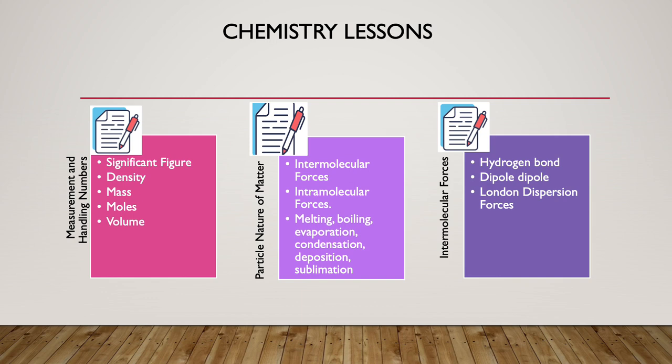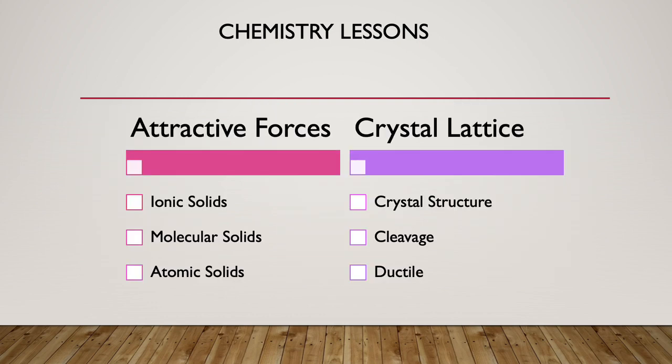In the attractive forces lesson, we will be going over the ionic solids, molecular solids, and atomic solids. Finally, for the crystal lattice structure, we will be going over the crystal structure, cleavage, and ductility. We will also be creating a mind map to summarize all the key concepts learned throughout this week.